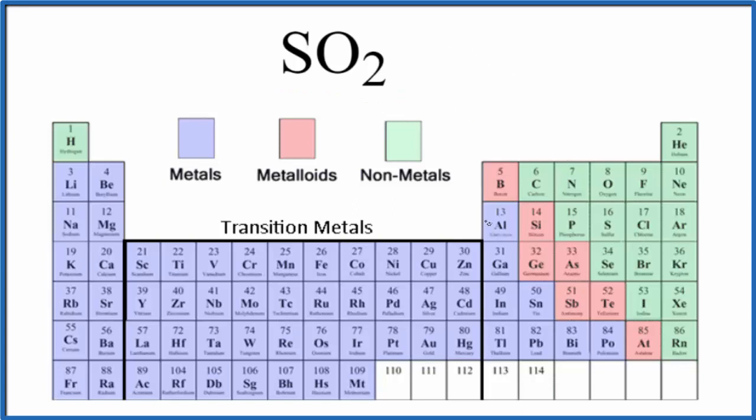If we look at the periodic table here, divided into metals, nonmetals, and metalloids, we find sulfur right here and then we find oxygen over here. So they're both nonmetals. This will be a covalent compound.